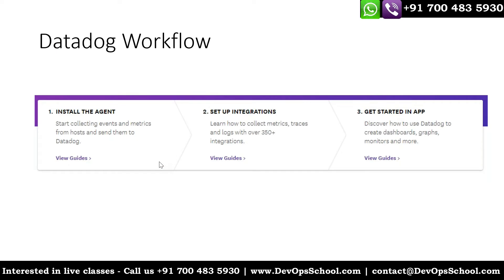Now let's look at the Datadog workflow. It's simple: install the agent in any of your hosts, install the integrations - for example Apache - and then start exploring the dashboards with metrics, reports, graphs, and alerts. In Datadog, alerts are called monitors. Whenever I say monitors, that equals alerts. That's all - it's very simple.